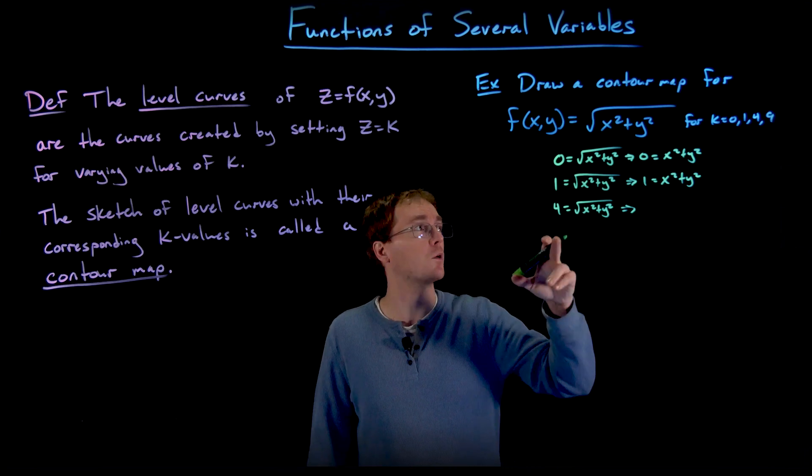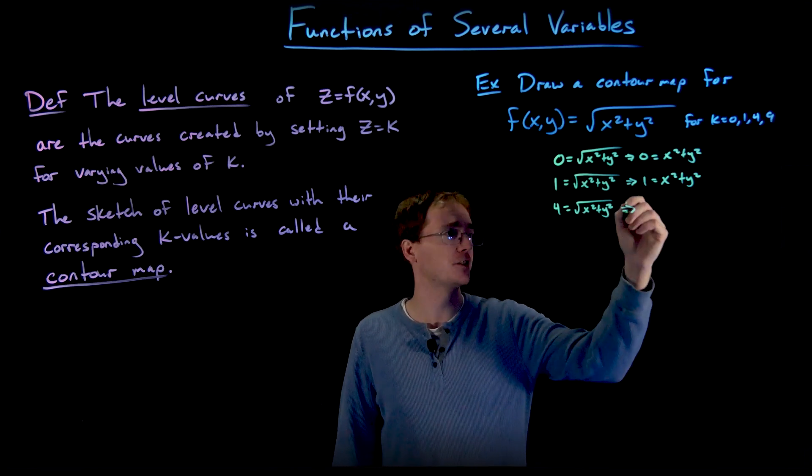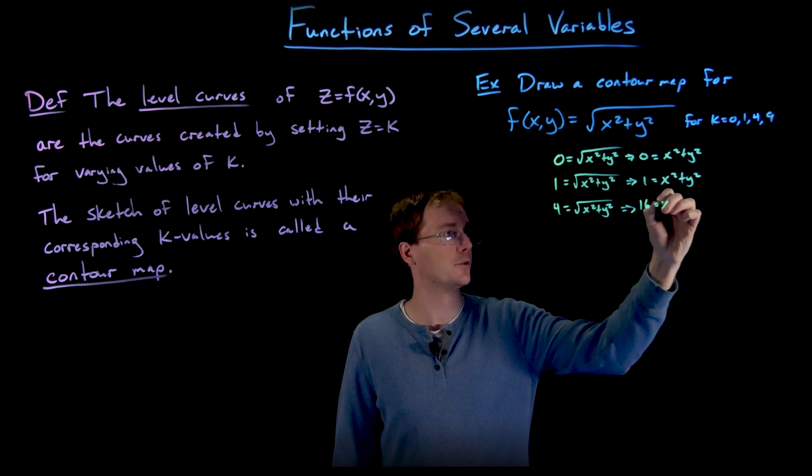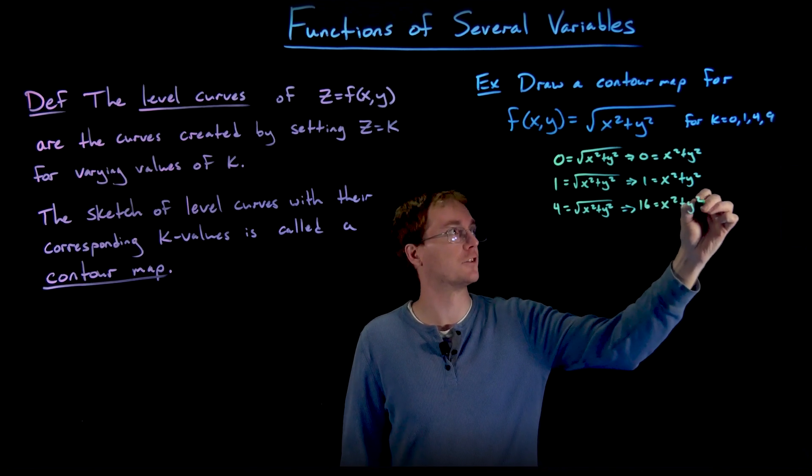And so our next level curve is going to correspond to k = 4. And that's going to give us the equation after rearranging things of 16 = x² + y².